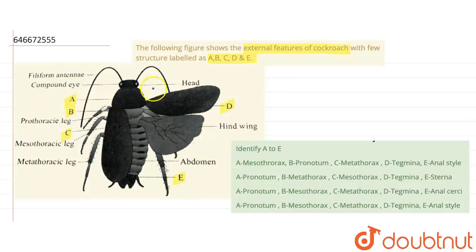Now cockroach body is divided into head, thorax and abdomen region. And the thorax can be further divided into prothorax, mesothorax and metathorax.